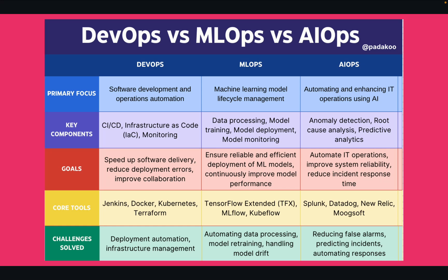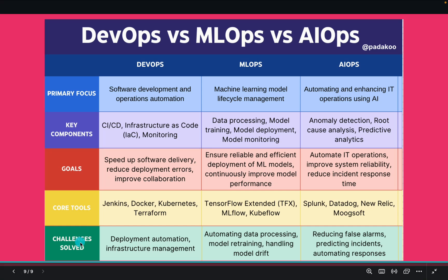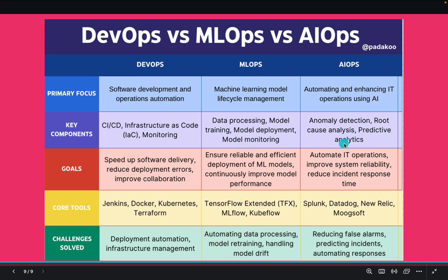What are the core tools? For DevOps: Jenkins or GitHub Actions, Docker, Kubernetes, and Terraform. For MLOps: TensorFlow, MLflow, and Kubeflow. For AIOps: Datadog and New Relic. And what challenges are you solving? With DevOps: deployment automation and infrastructure management. With MLOps: automated data processing and model training handling. And with AIOps: reducing false alarms, predicting incidents, and automating responses. I hope with this table and explanation you have a high-level idea of what these practices are doing, what problems they are solving, what their focus area is, and what kind of skills are involved.